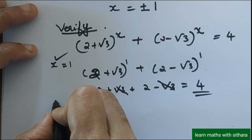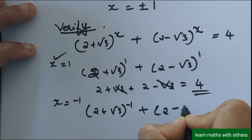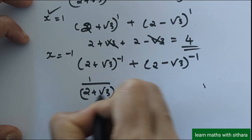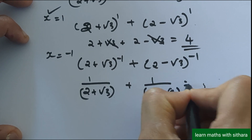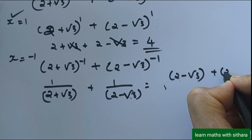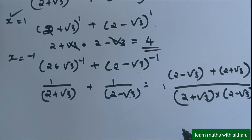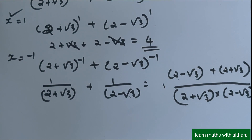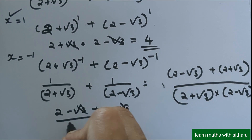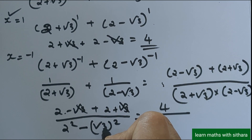For x = −1: (2 + √3) raised to −1 plus (2 − √3) raised to −1 equals 1/(2 + √3) plus 1/(2 − √3). Combining over a common denominator: (2 − √3 + 2 + √3) / ((2 + √3)(2 − √3)) = 4 / (4 − 3) = 4 / 1 = 4. So x = −1 is also verified.